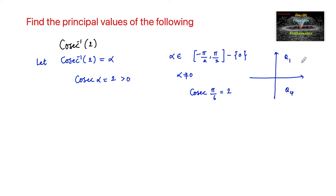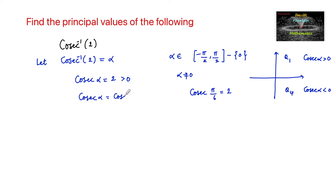Since 2 is positive, cosecant alpha is positive in the first quadrant and negative in the fourth quadrant. So we consider the first quadrant: cosecant alpha equals cosecant pi by 6, which is 2. Therefore alpha is equal to pi by 6.